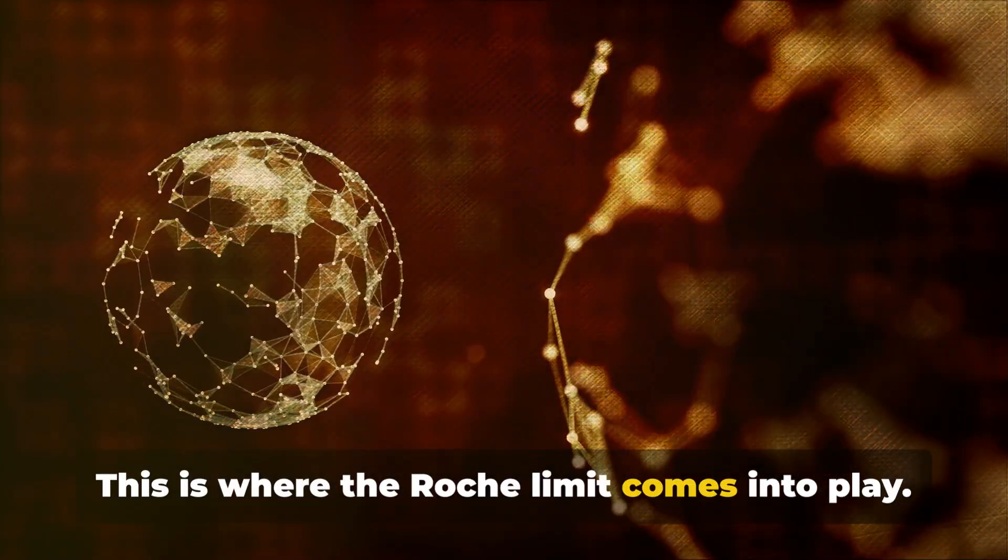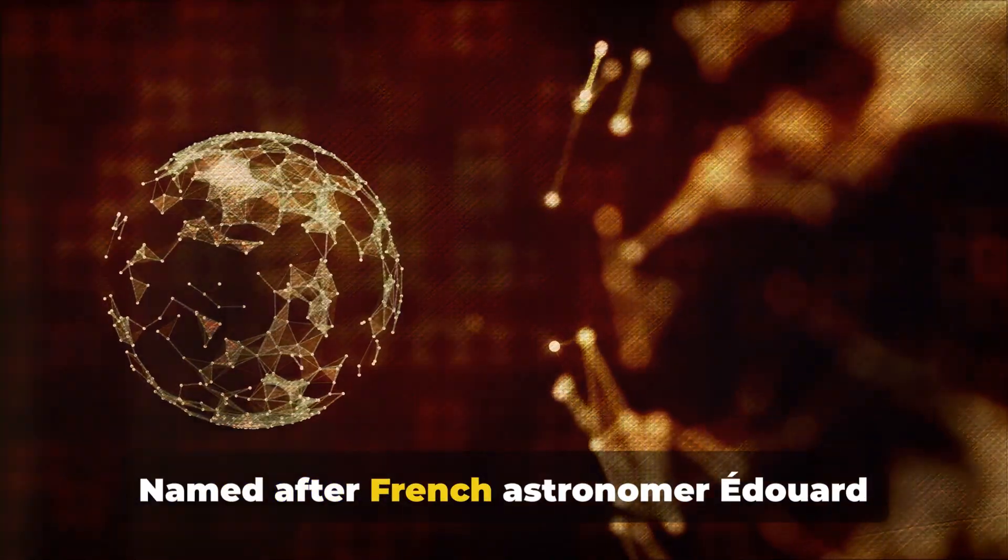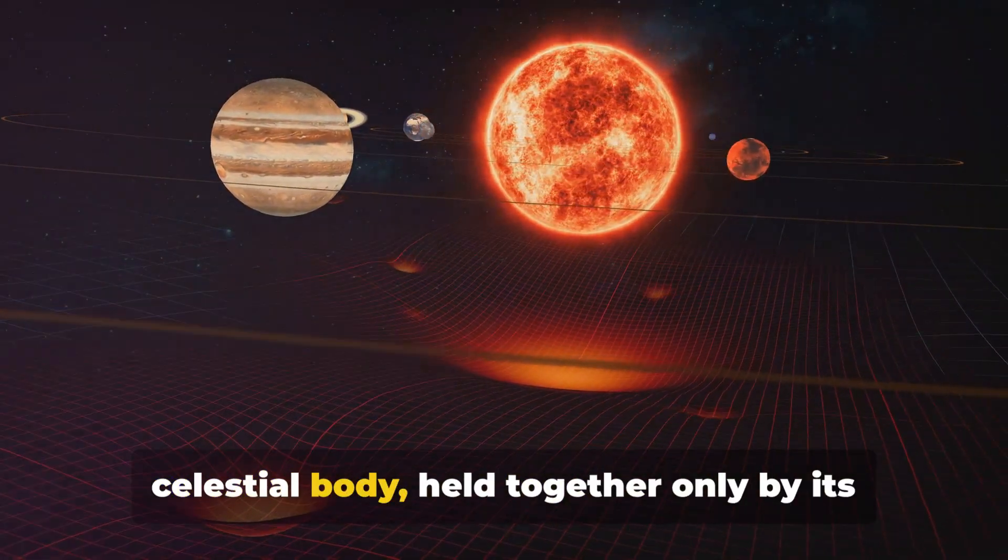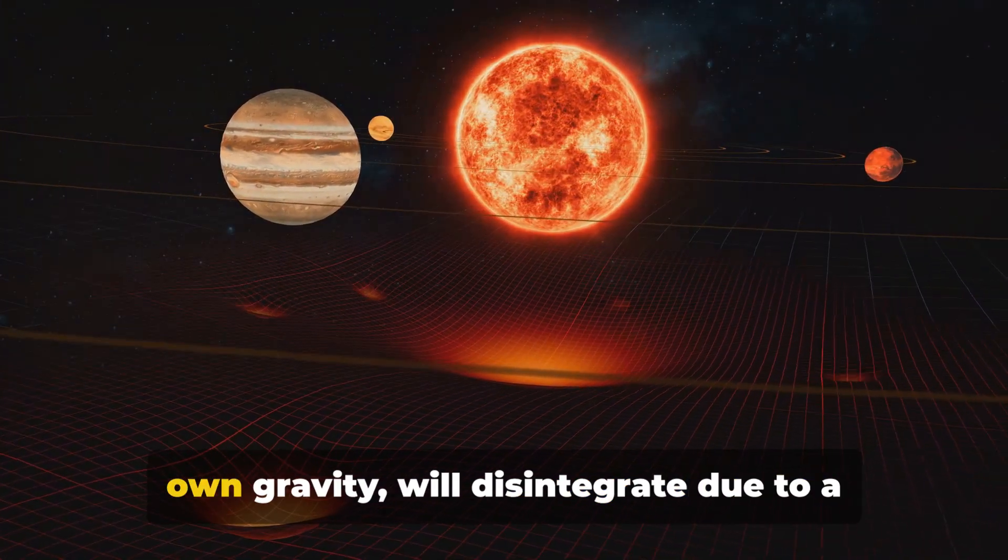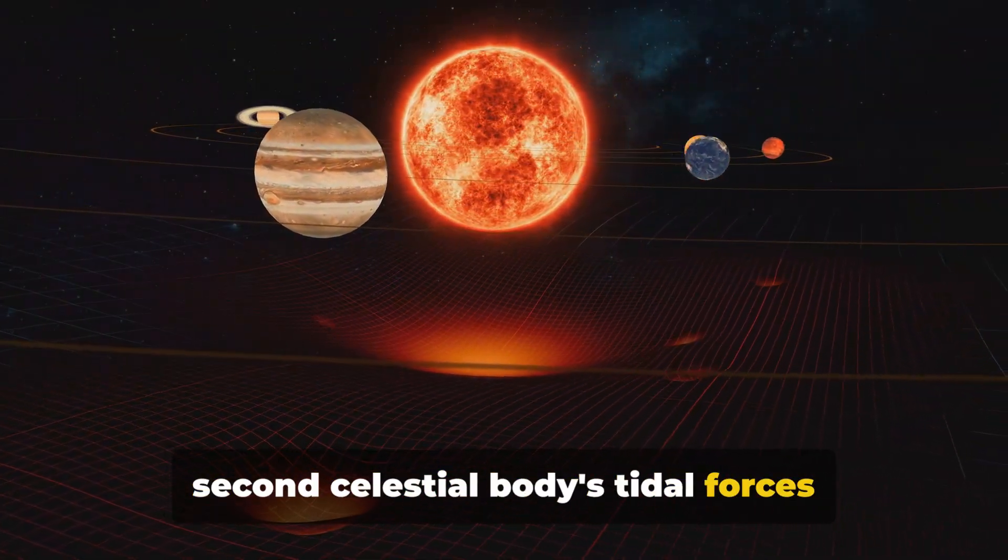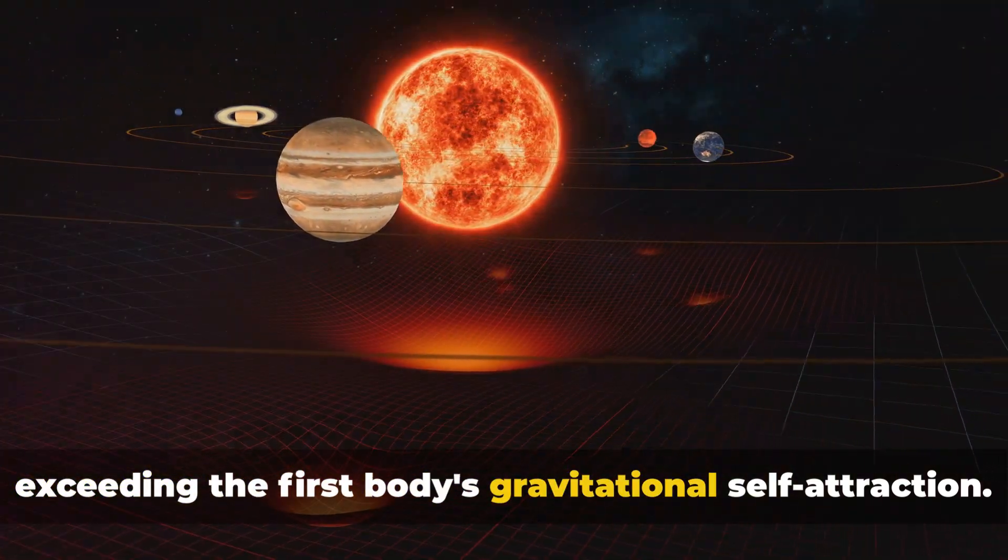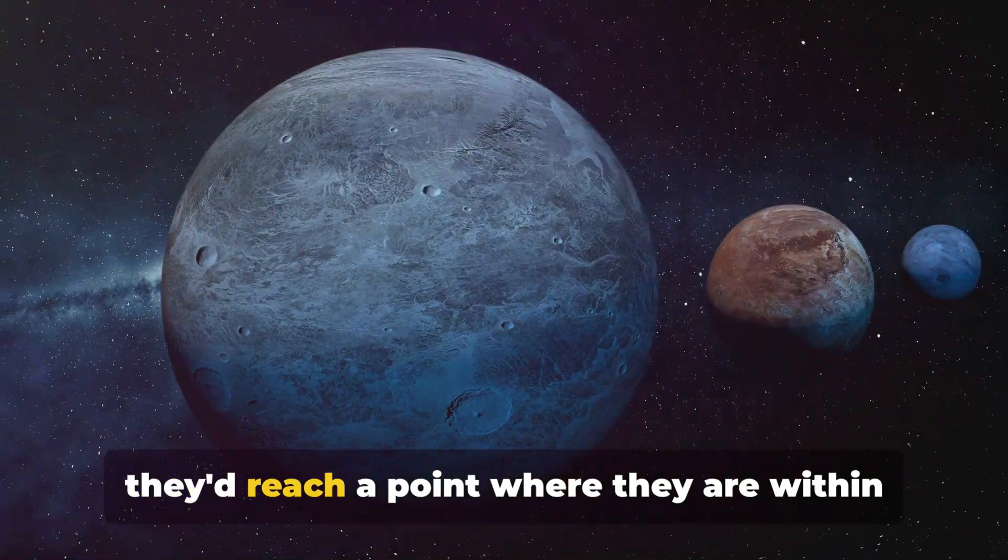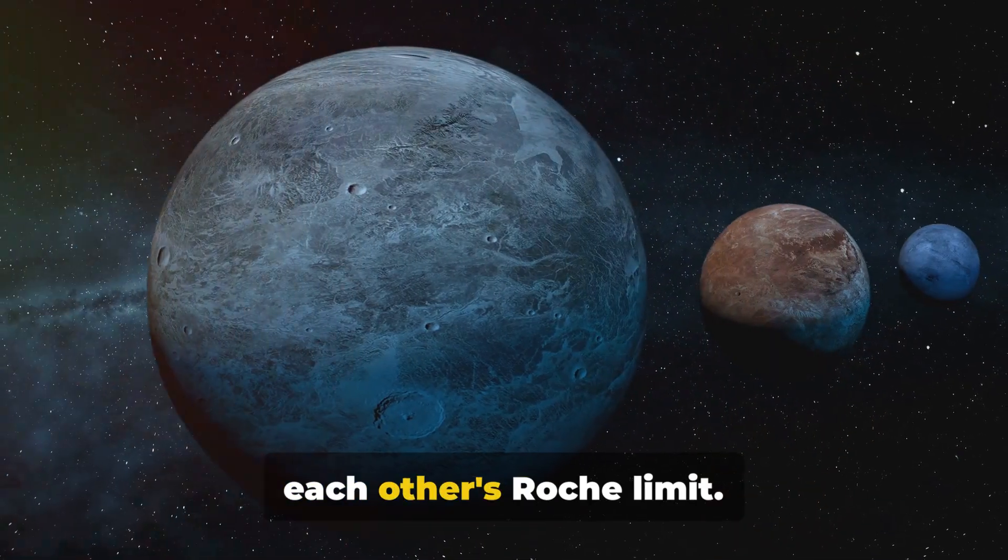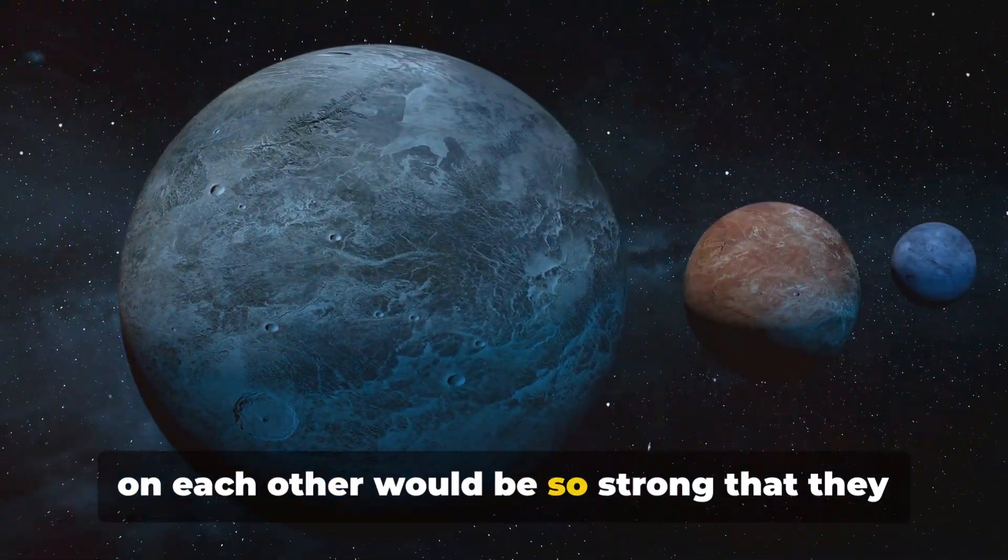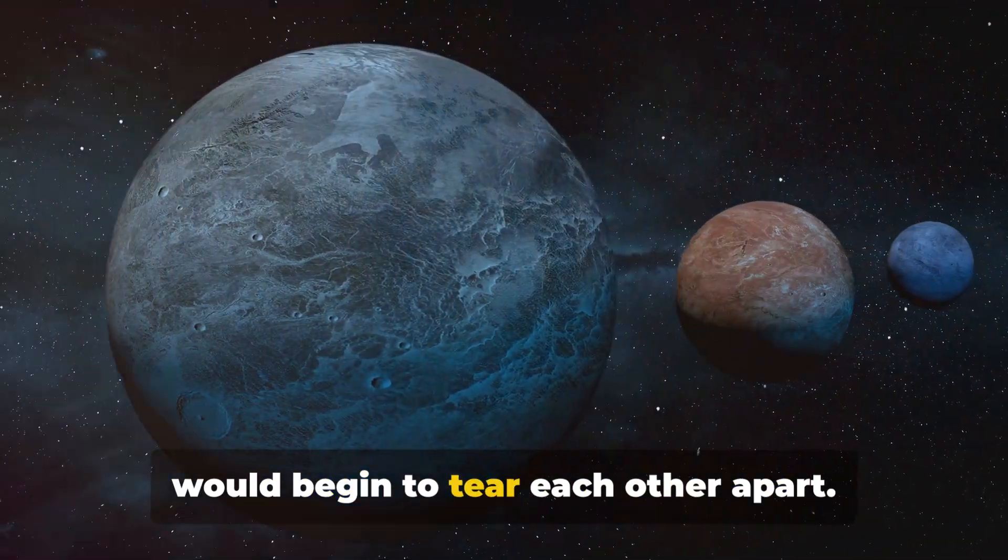This is where the Roche limit comes into play. Named after French astronomer Edouard Roche, this is the distance within which a celestial body, held together only by its own gravity, will disintegrate due to a second celestial body's tidal forces exceeding the first body's gravitational self-attraction. As the planets approach each other, they'd reach a point where they are within each other's Roche limit. The tidal forces would be so strong they would begin to tear each other apart.